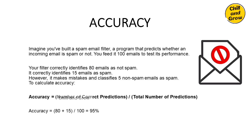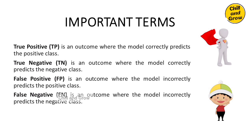Next, let's look at four important terms in machine learning metrics — these are very important. The four terms are: True Positive, True Negative, False Positive, and False Negative.